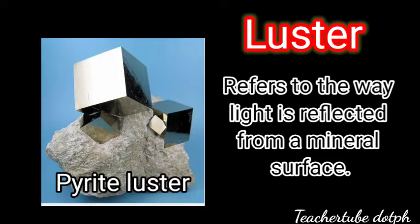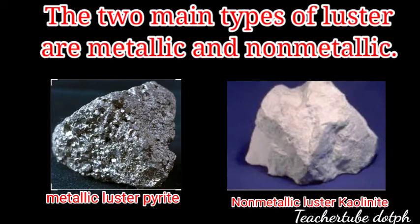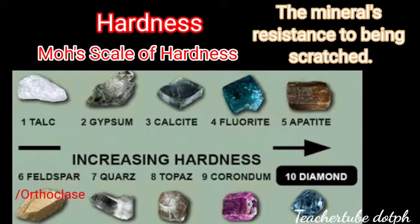An example of luster is pyrite. There are two main types of luster: metallic and non-metallic. Pyrite is an example of metallic luster, and kaolinite is an example of non-metallic luster.